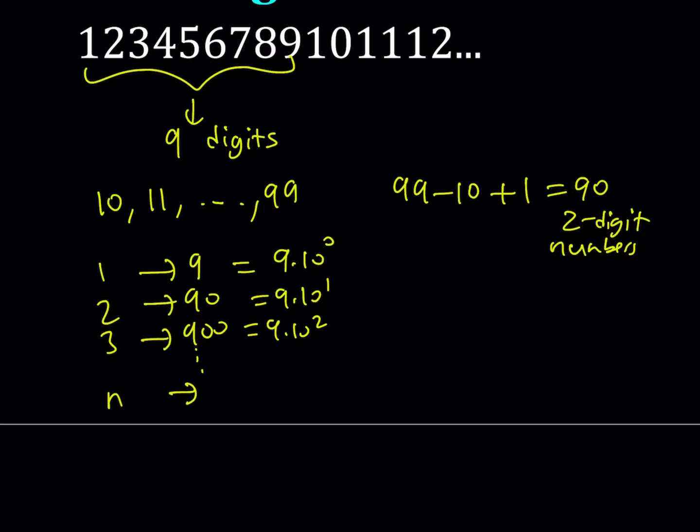So if you have an n-digit number, then the number of numbers that are n digits is going to be 9 times 10 to the power n minus 1. Because in the case of 3, we have to subtract 1 and that's true for all of them. We don't really need that much, but I just wanted to show you the general formula as well.